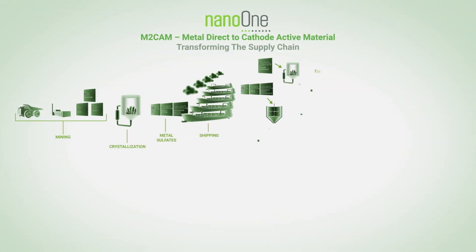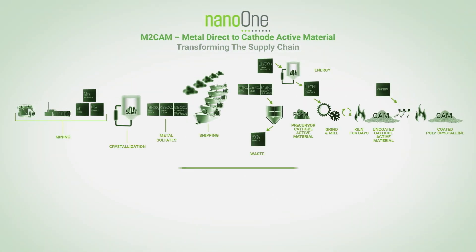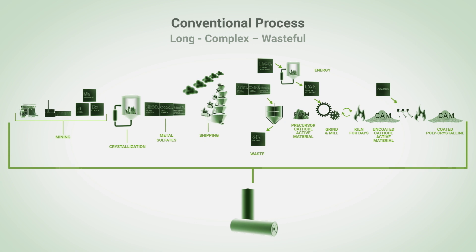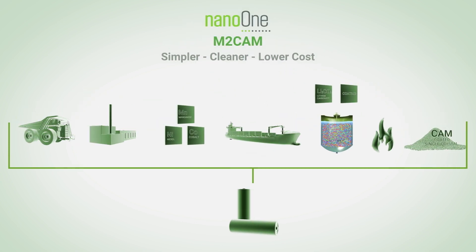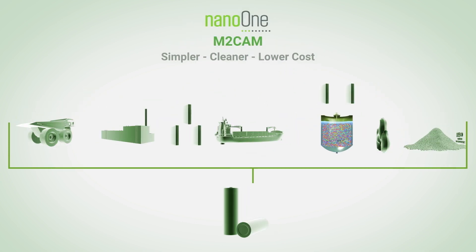Nano One is disrupting the lithium-ion battery supply chain with technology that simplifies cathodes, cleans up raw materials, and drives down costs.